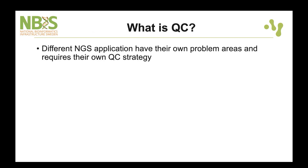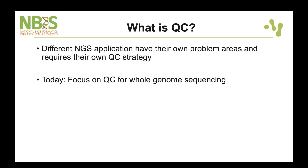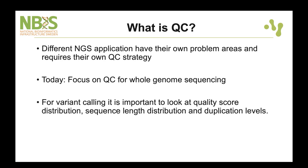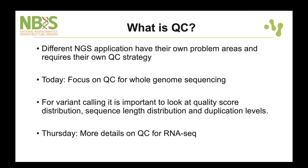Depending on what you are going to do with your sequence data, there are quite a lot of things you would look at for quality control. Today's example is based on whole genome sequencing for small variant calling, and we will continue with an exercise on variant calling tomorrow using the same samples. For variant calling, you would look at the quality score distribution as in the example, and I would also recommend looking at the sequence length distribution and at the duplication levels. These are things you can read more about in the instructions for today's lab. If you do RNA-seq, for example, you would look at other metrics as well, and more about that on Thursday.